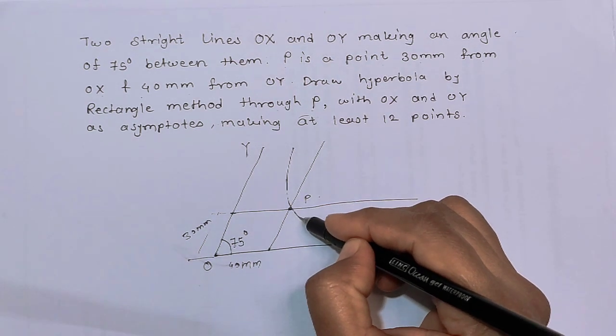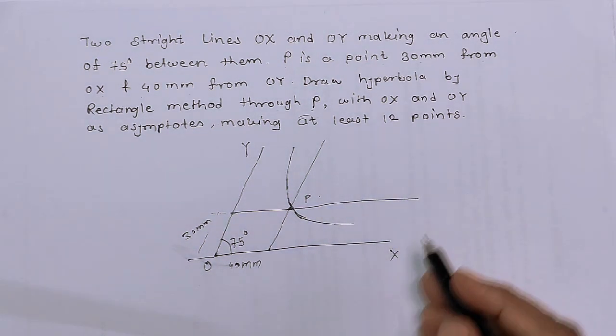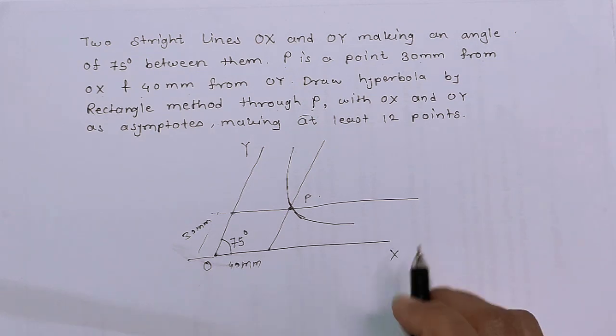And we have to draw the hyperbola passes through point P. Always remember one thing: whenever a problem gives you asymptote, it means it's a rectangular hyperbola.